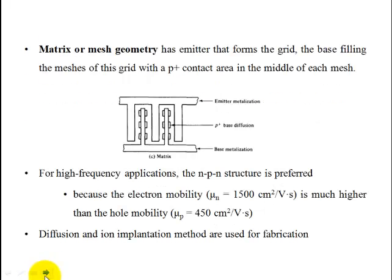Matrix or mesh geometry has emitters in a grid-like structure. The figure shows this grid-like structure with the base also in a grid-like pattern. A P-plus contact layer is added for the mesh configuration.